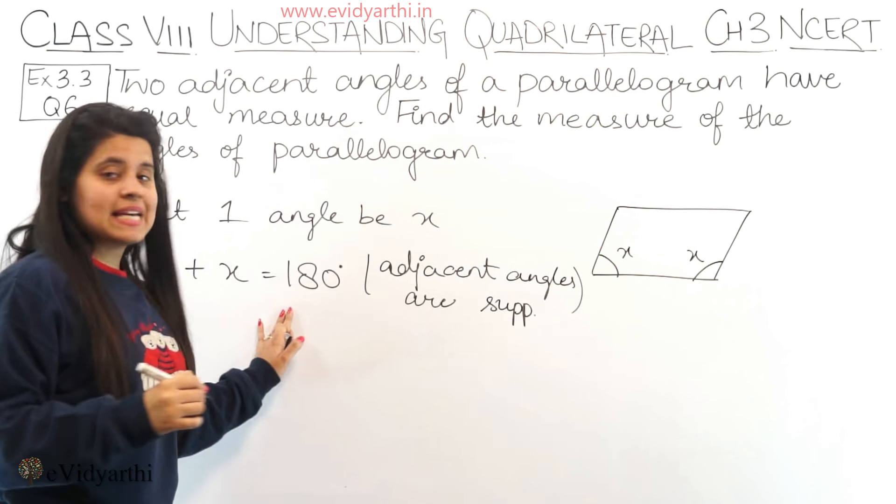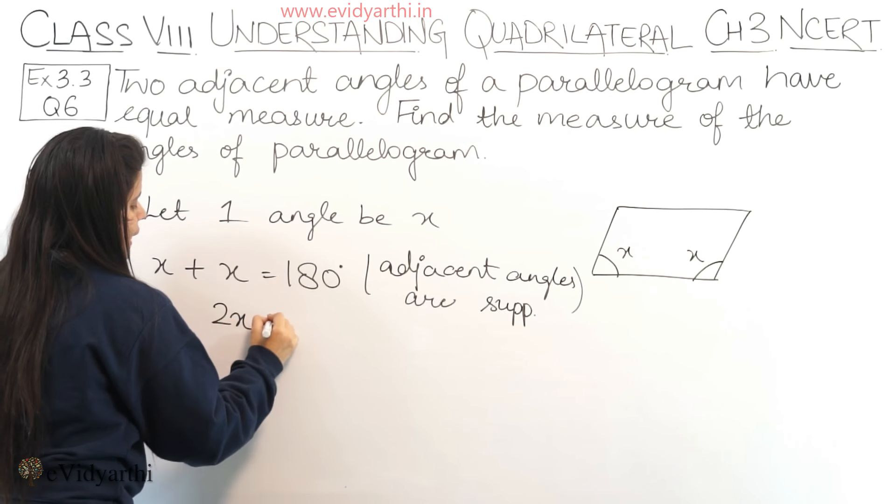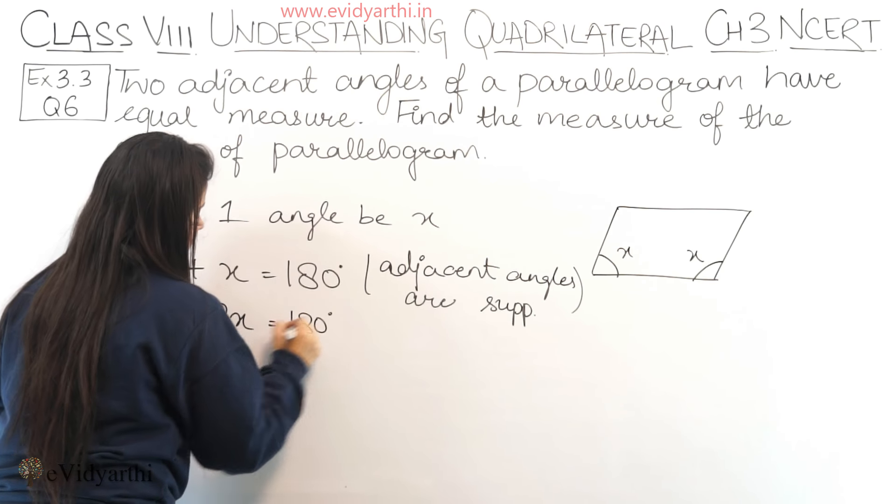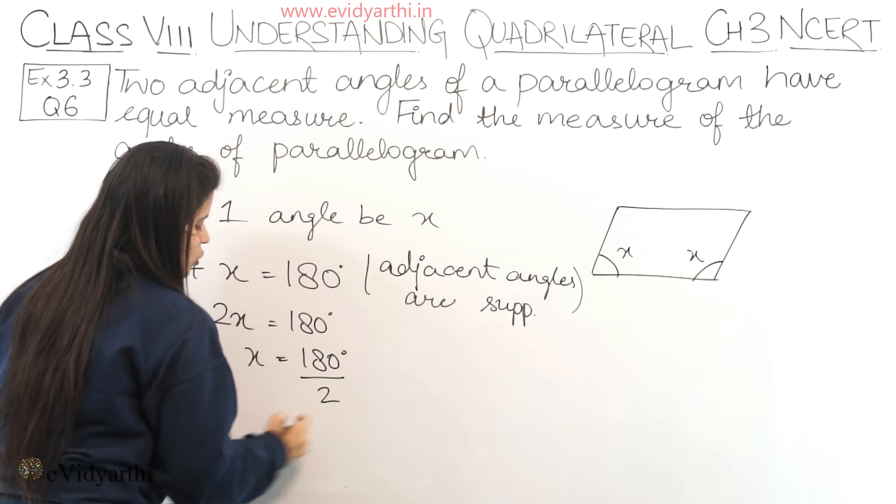So this means x plus x is 180. Now x plus x ho gaya 2x equals 180 degrees. x equals 180 degrees upon 2.